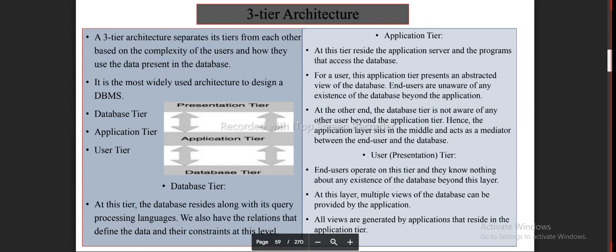At this tier reside the application server and the programs That access the database. For a user This application tier presents an abstracted View of the database. End users are unaware of any Existence of the database beyond the application. At the other end The database tier is not aware of any Other user beyond the application tier. Hence, the Application layer sits in the middle and acts as a mediator Between the end user and the database.